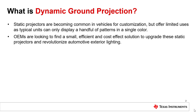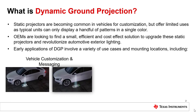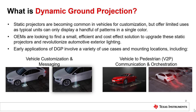OEMs are looking for a way to differentiate their vehicles and provide innovative customization options by upgrading the current static projectors, which would be a major step forward for automotive exterior lighting. Early applications of DGP will involve vehicle customization and vehicle messaging and alerts, with Dynamic Ground Projection modules mounted in the door panel and side mirror. The major difference between static and dynamic projectors is that dynamic projectors can display an endless amount of patterns in full color. Future applications include vehicle-to-pedestrian communication and vehicle orchestration, which allow the vehicle to communicate with pedestrians and project a full 360-degree image around the car.